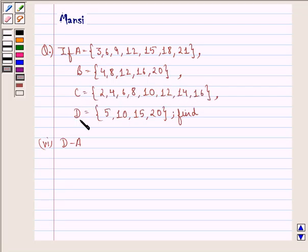And D equals the set 5, 10, 15, 20. Then find the sixth part that is D minus A. Let us see the solution behind this.